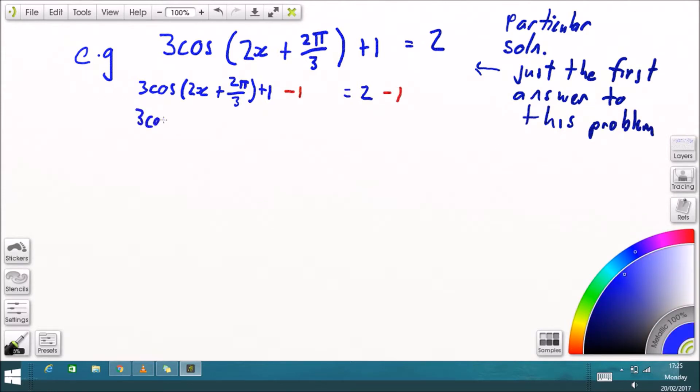Well, what's happening outside the bracket? So first of all we've got an addition, so we have to undo that with a subtraction. That leaves us with that whole thing equals 1. Then the opposite of a multiplication, we divide both sides by 3. That leaves us with the equation cosine of the angle, the angle being 2x plus 2 pi over 3, equals 1 over 3. Then we have to just undo the whole cosine thing.